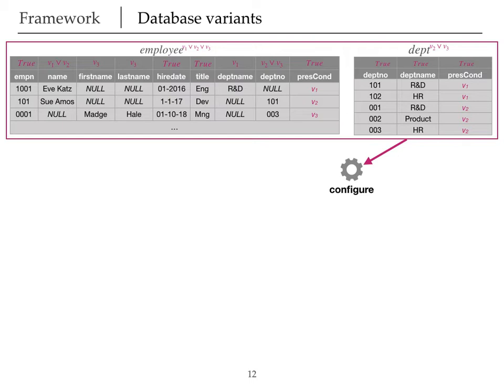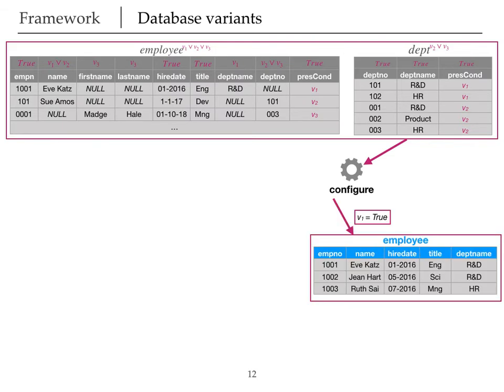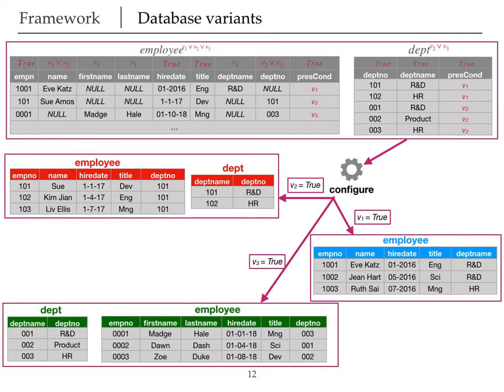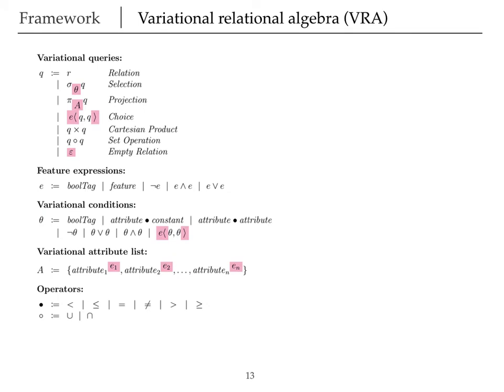Now, given a configuration, we can configure our variational database to the plain database variants that we had. So for v1, we get the blue database. For v2, we get the red one. And for v3, we get the green one.